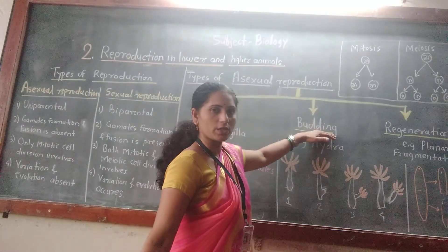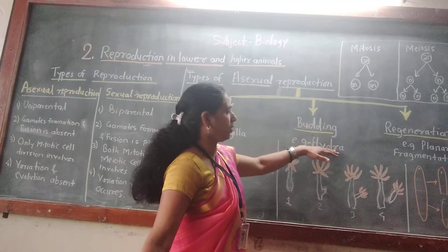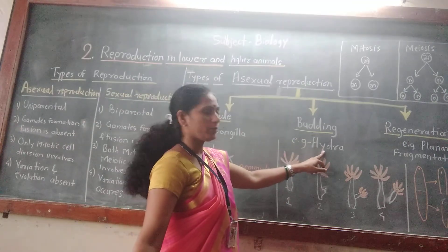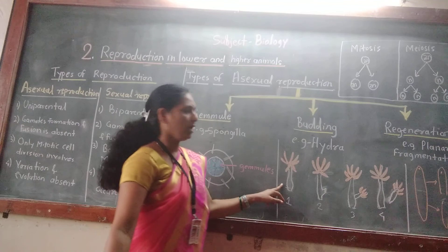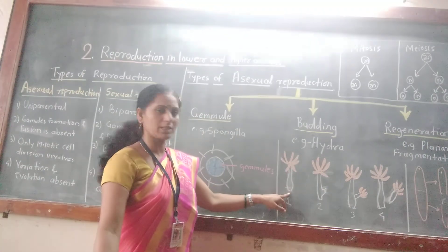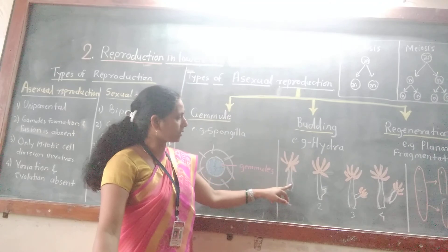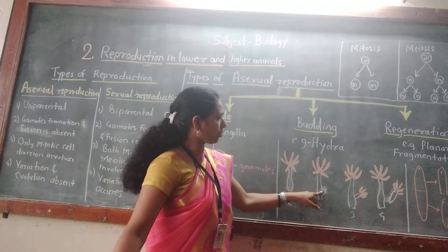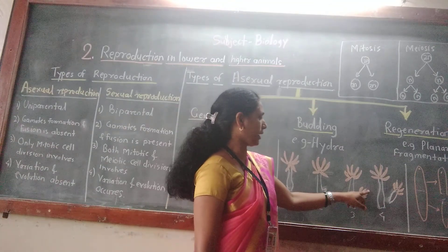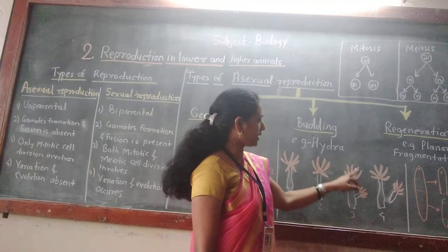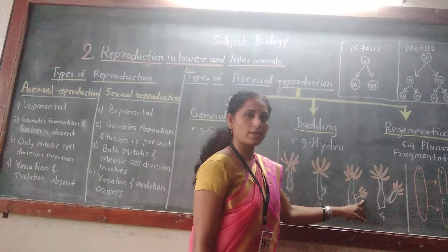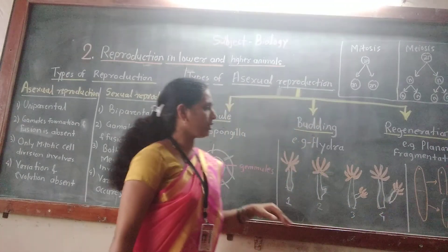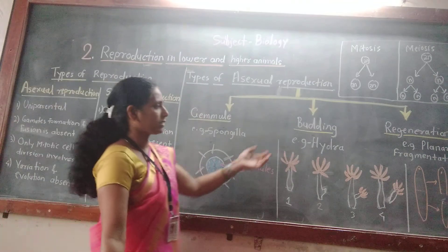The second type of asexual reproduction is budding. Budding may be found in phylum Coelenterata, and ascidians also show this type of reproduction. One example is Hydra. In this diagram, Hydra shows a small bud towards the basal end of the body. This bud grows, develops tentacles around the anterior part like the parental Hydra, and this young Hydra becomes mature, detaches from the parental Hydra, and grows into a new individual. This mechanism is called budding.